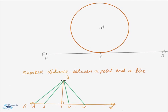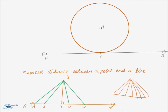Let us have a point X and a line AB. For a point and a line, there are infinite number of distances possible. Let some of the distances be XR, XS, XT, XU, and XV. Let them make certain angles with the line AB, and let XT make an angle of 90 degrees with AB.